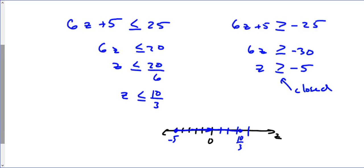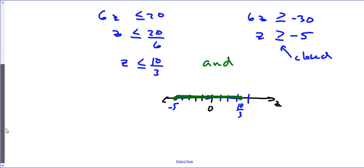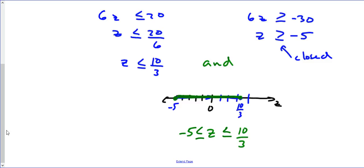Because these two regions overlap and conjoin, this confirms it's an AND statement. We can combine them by writing the solution as a compound inequality: negative 5 is less than or equal to z, which is less than or equal to 10/3.